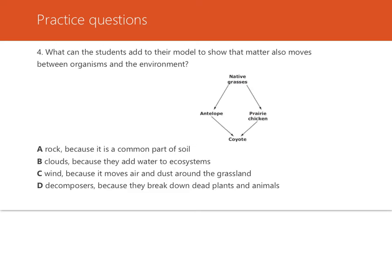Number four: what can the students add to their model — the one we chose, C — to show that matter also moves between organisms in the environment? The other thing we talked about in food chains and food webs were decomposers, because they break down dead plants and animals. The answer is D.